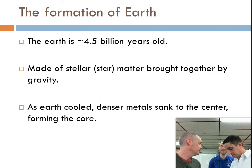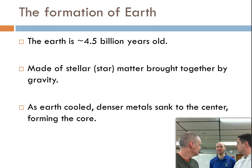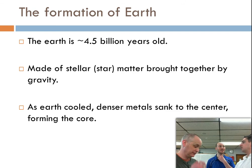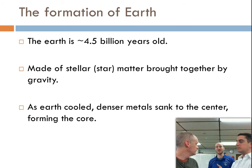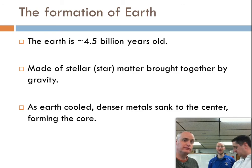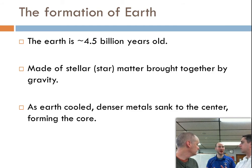Earth was formed about 4.5 billion years ago. That was a long time ago. At that point, there was a lot of matter from exploding stars just circulating, swirling and flying around. After the Big Bang, there's a bunch of stuff everywhere. Our star existed at this point, but we're talking matter from other stars, other galaxies, all over the place.